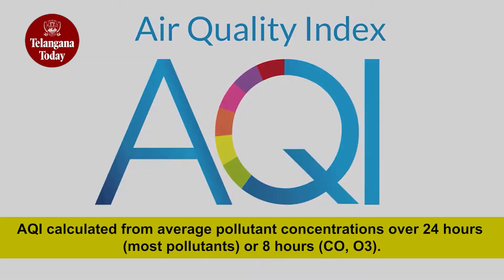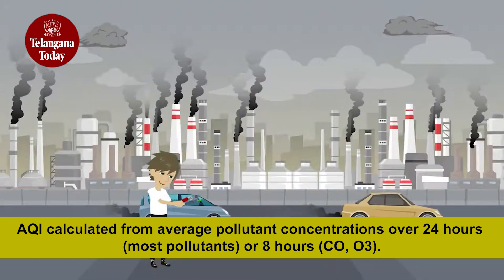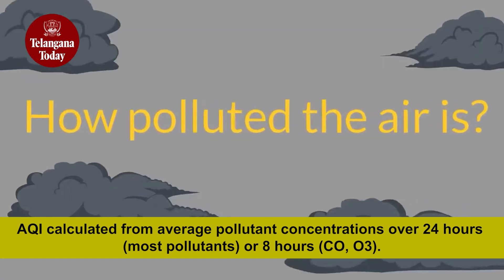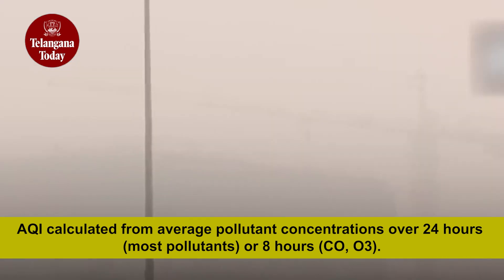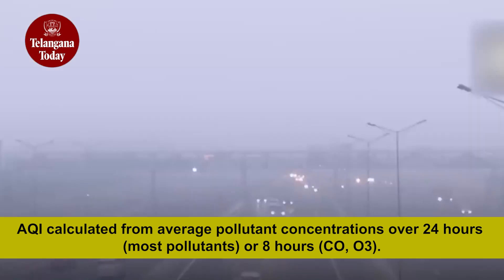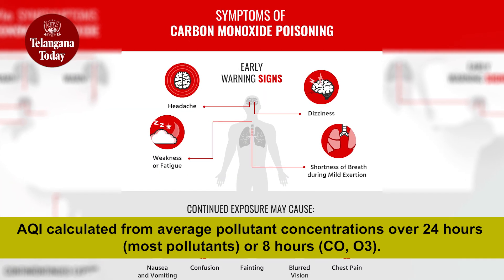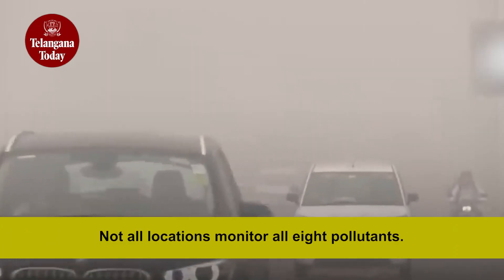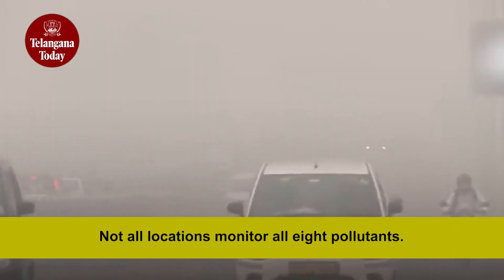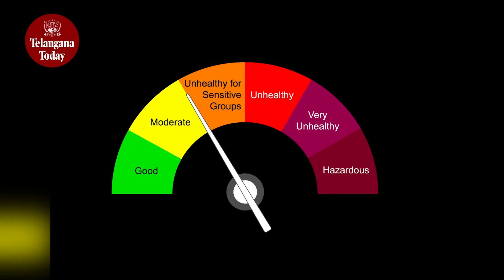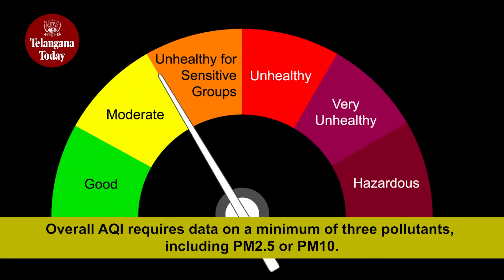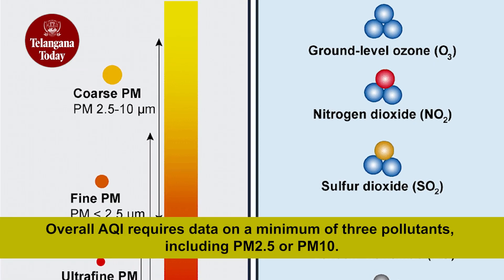The AQI is calculated based on the average concentration of a particular pollutant measured over a standard time interval. The standard time interval is 24 hours for most pollutants, and 8 hours for carbon monoxide and ozone. All eight pollutants may not be monitored at all locations; overall AQI is calculated only if data is available for a minimum of three pollutants.